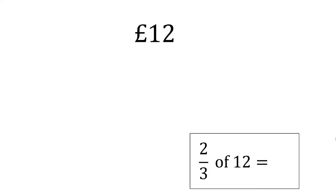This is an idea we can extend into finding fractions of amounts. These amounts could be amounts of money, distances, or just numbers. We could look at this as a question: find two-thirds of 12. This could be £12 or it could be 12 of something else — it doesn't really matter, the process is the same. I'm going to suggest two ways of laying these questions out, though there are quite a lot of different ways, and they're all basically the same process.